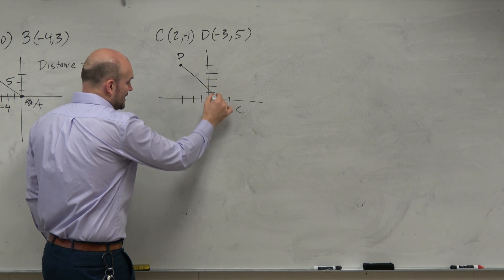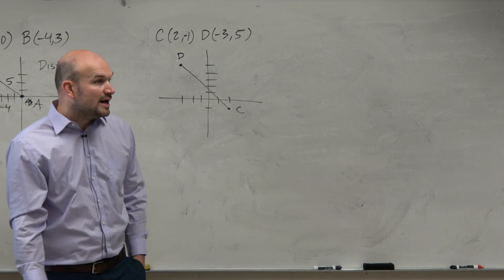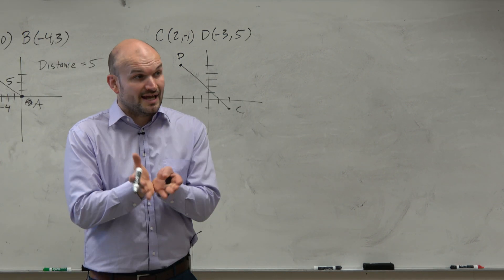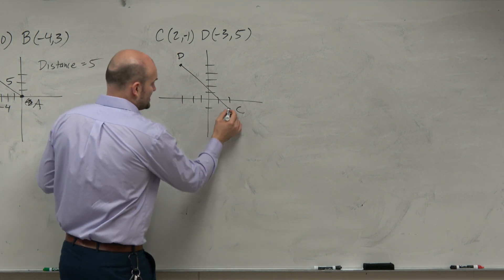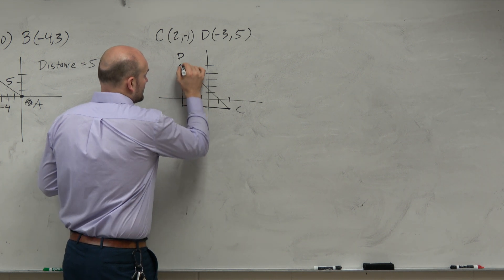Now, obviously, we want to find this length here again. But what we can do is, if we create a right triangle, we could use our Pythagorean theorem, right?